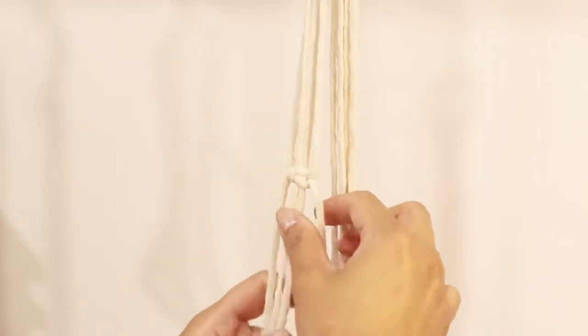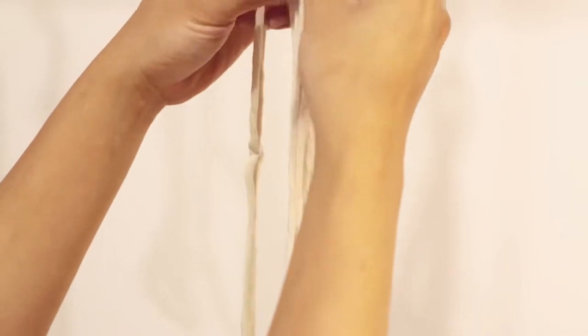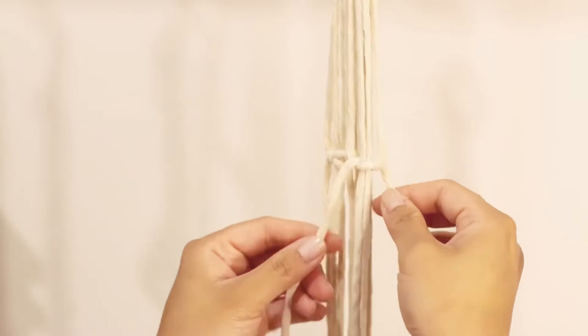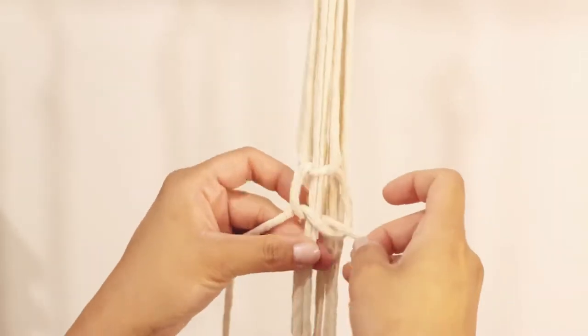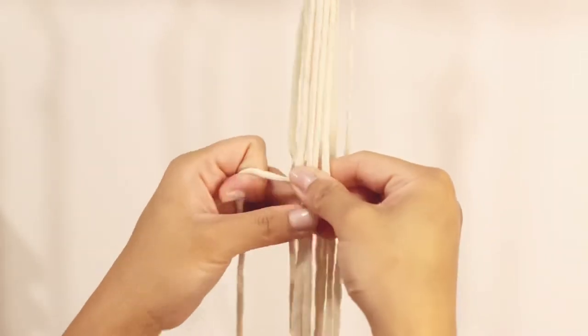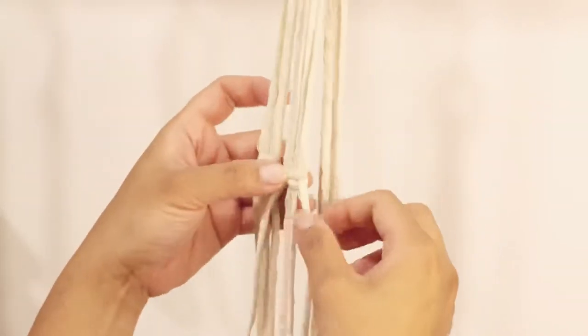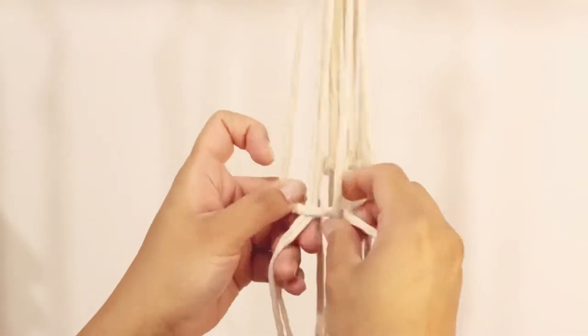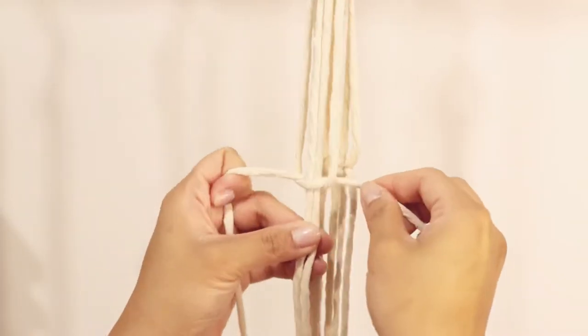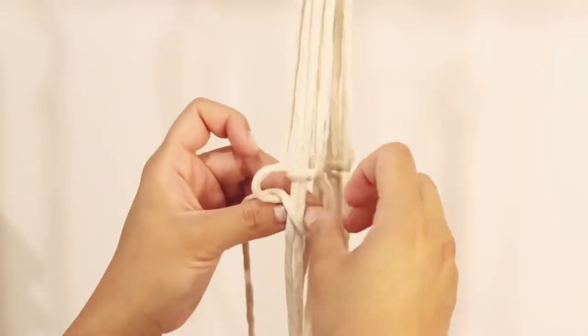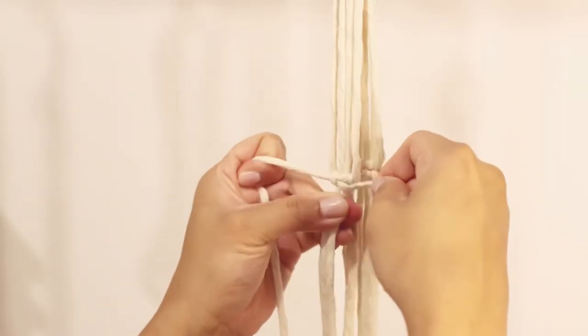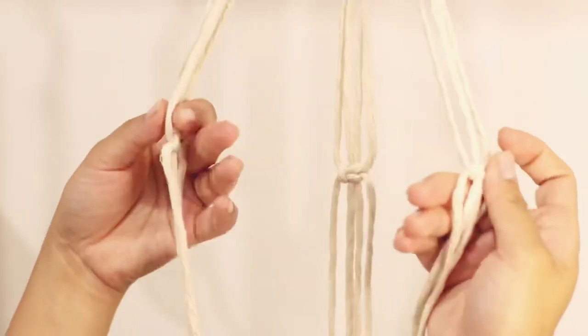So that's our first square knot. Then we'll grab another four strings that are close together, making another square knot. That's our second square knot. Making sure that they are even, we're gonna grab another four strings, making our third square knot. And there you have it, we have three sets of square knots.